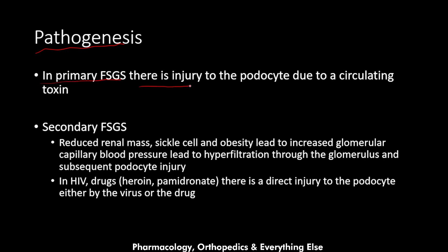In the primary type of FSGS, there is injury to the podocyte due to an unknown circulating toxin. The secondary type has different pathogenesis depending on the cause. When secondary FSGS results from reduced renal mass, sickle cell disease, or obesity, these lead to increased glomerular capillary blood pressure, causing hyperfiltration through the glomerulus and subsequent podocyte injury.